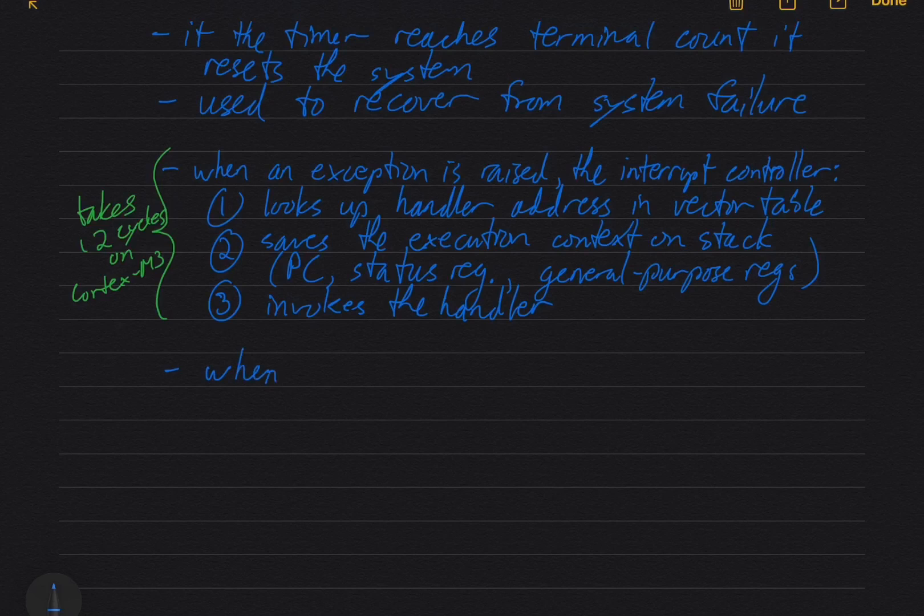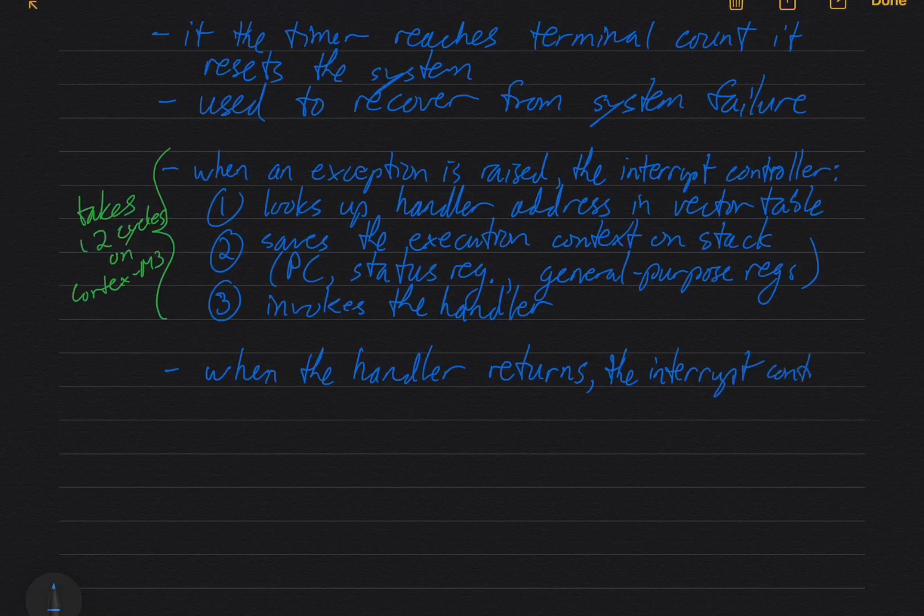And then when the handler returns. So it looks like a regular subroutine. It executes basically a return from subroutine instruction. BXLR is the instruction. And that through some trickery in the architecture lets the hardware know that it's returning from the handler. And then it takes some steps. So then the interrupt controller goes through two steps.